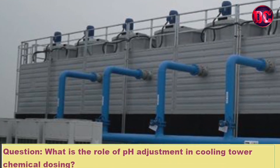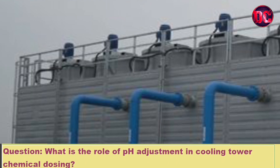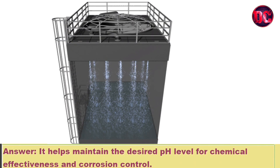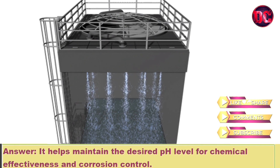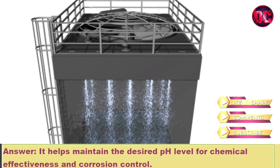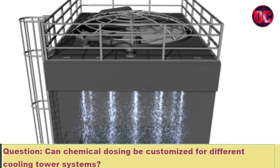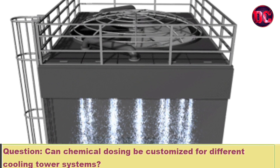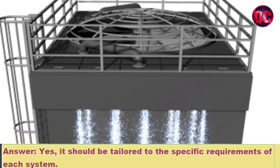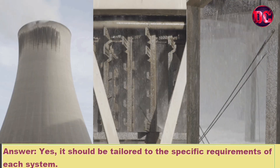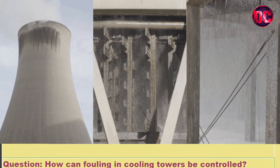Question: What is the role of pH adjustment in cooling tower chemical dosing? Answer: It helps maintain the desired pH level for chemical effectiveness and corrosion control. Question: Can chemical dosing be customized for different cooling tower systems? Answer: Yes, it should be tailored to the specific requirements of each system.